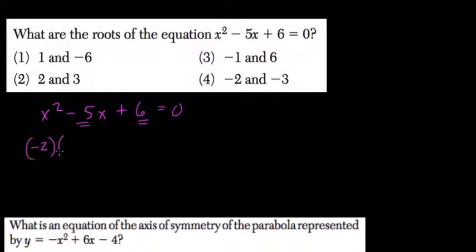Well, don't forget that negative 2 times negative 3 equals positive 6. And if we add negative 2 and negative 3, we get negative 5.